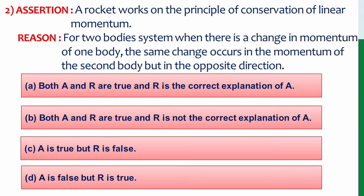Question number 2. Assertion: a rocket works on the principle of conservation of linear momentum. Reason: for two-body system where there is a change in momentum of one body, the same change occurs in the momentum of the second body but in the opposite direction.